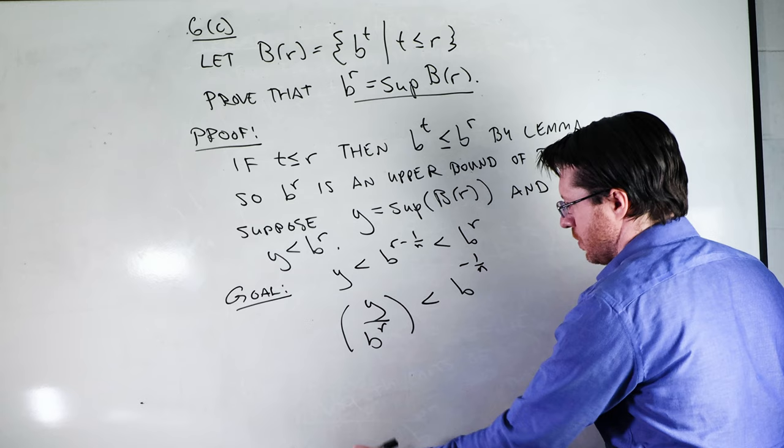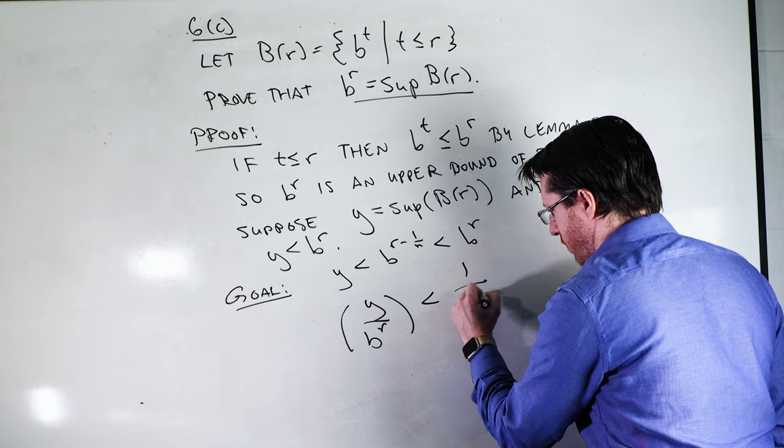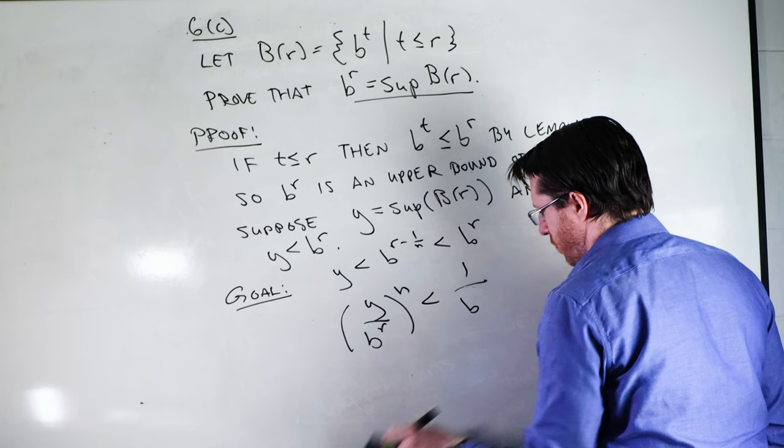So what I'm going to do is I'm going to go ahead and divide both sides by BR. I'm going to have this and it's going to be less than B raised to minus one over N. And so that's actually the same as one over B raised to one over N. And if I take the nth power of both sides, I'm going to get an nth power here. I'm going to get one over B.